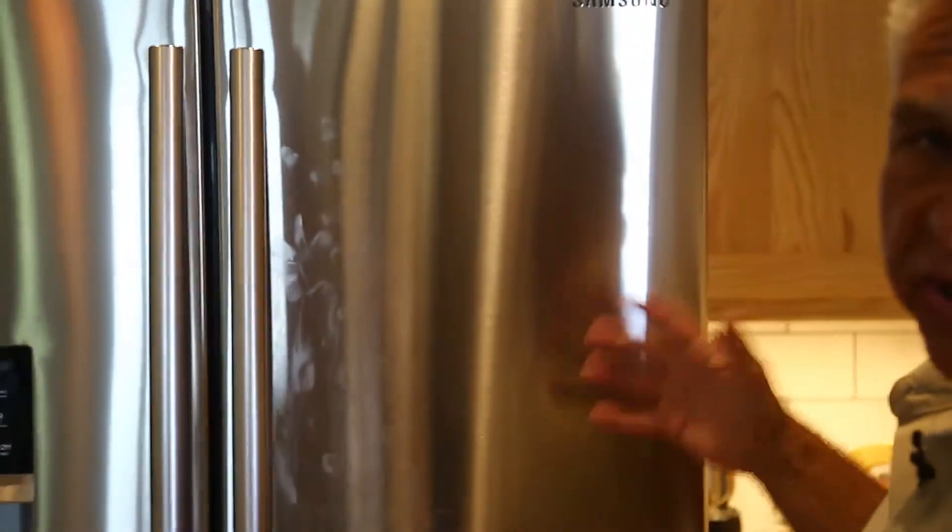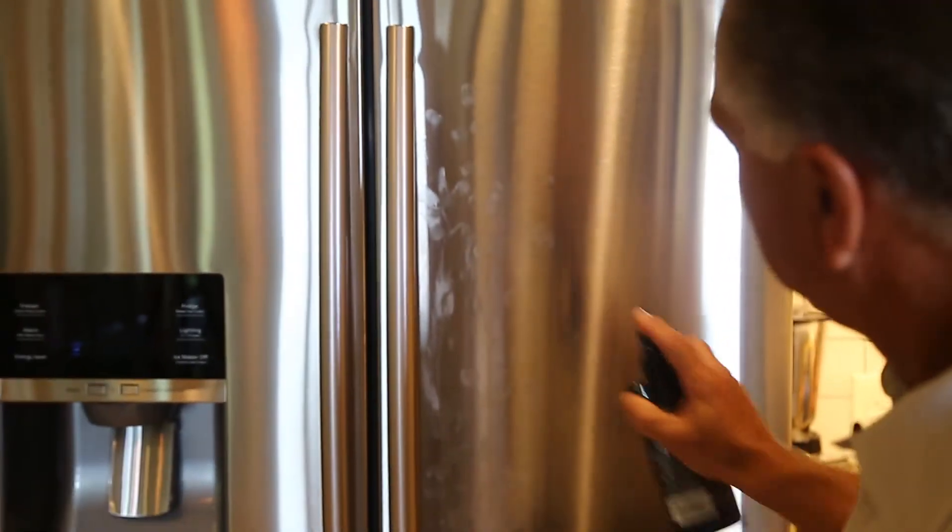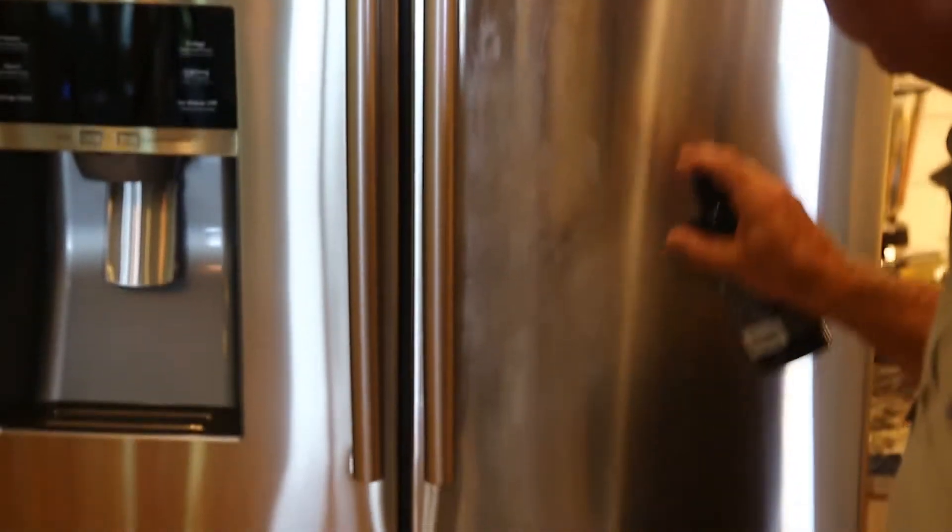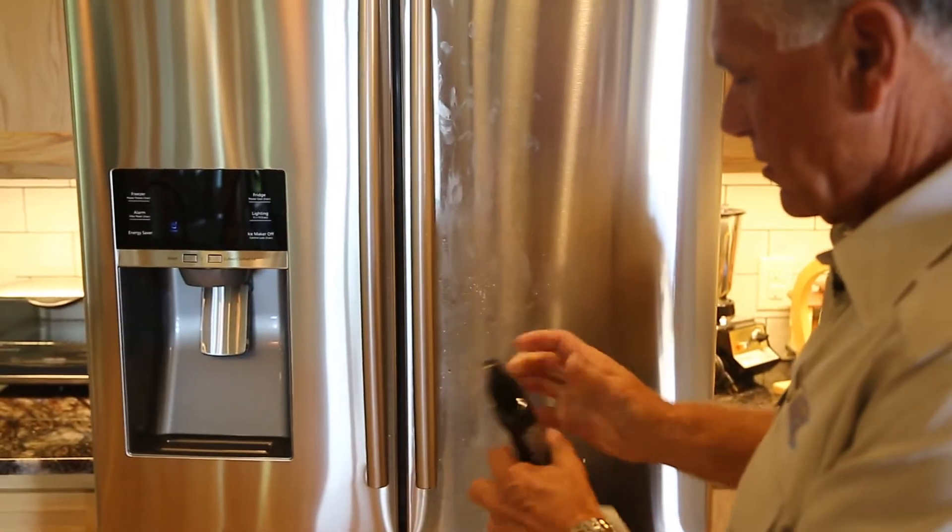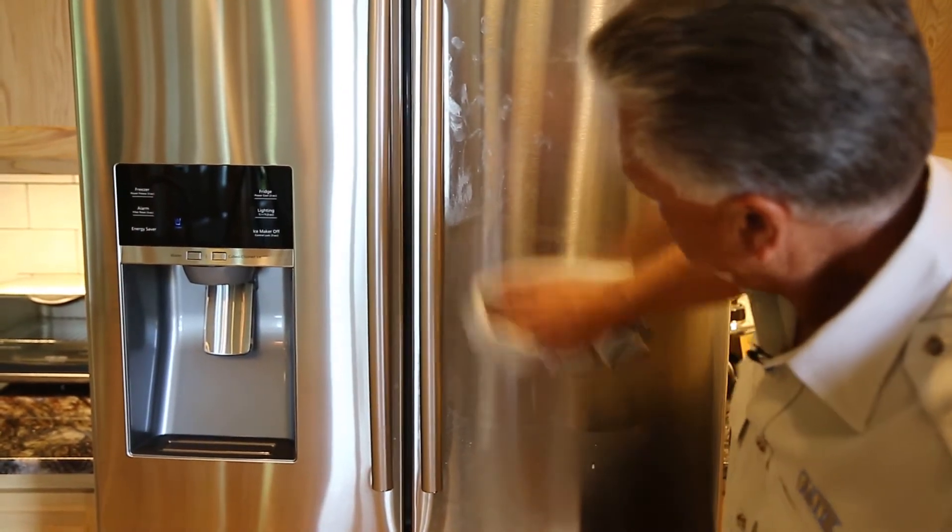So here's a great example of stainless steel appliance. Now fingerprints, grease, oil. With the Flitz product, you spray it on. Take a clean microfiber, which is part of the value added, and you wipe it clean.